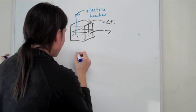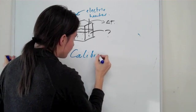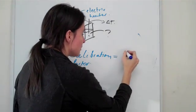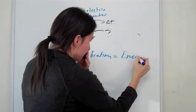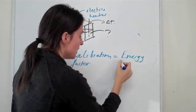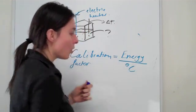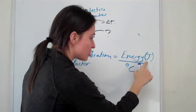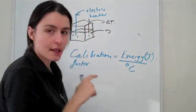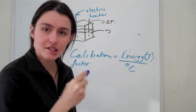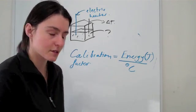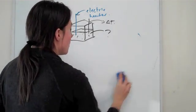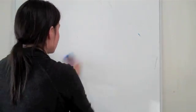So we can set up something known as a calibration factor. The calibration factor is the amount of energy you have delivered — which is VIt — divided by how much the temperature of the water changed. This gives you something relating joules to the temperature change that particular calorimeter undergoes, and this is essential for your understanding of calorimeters.